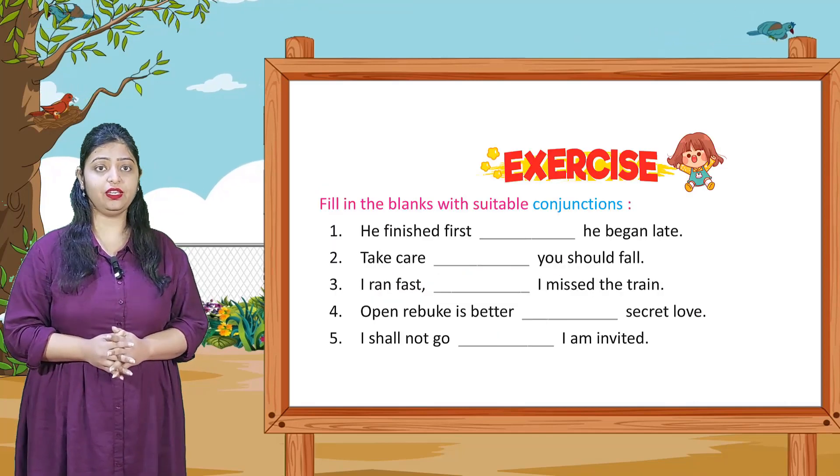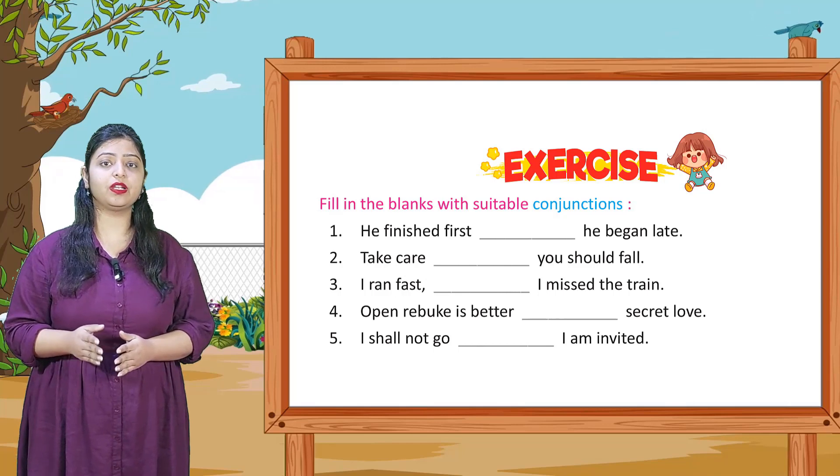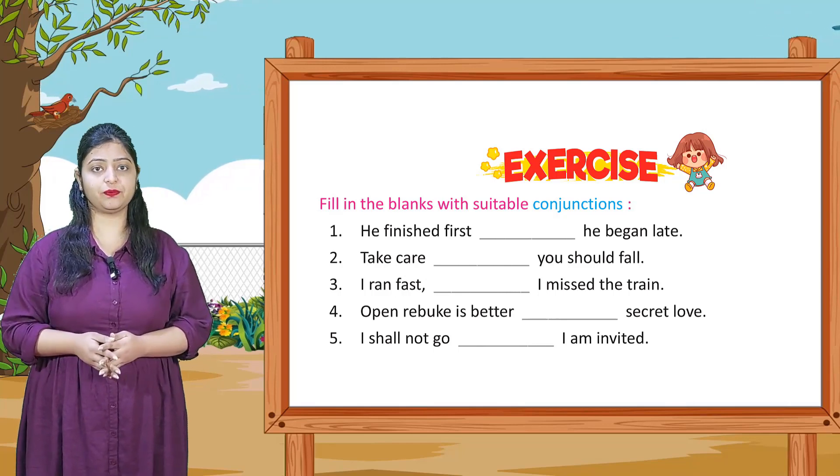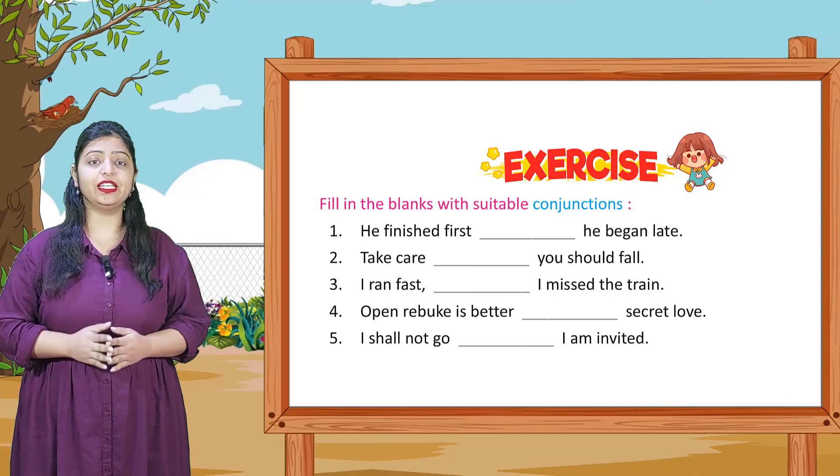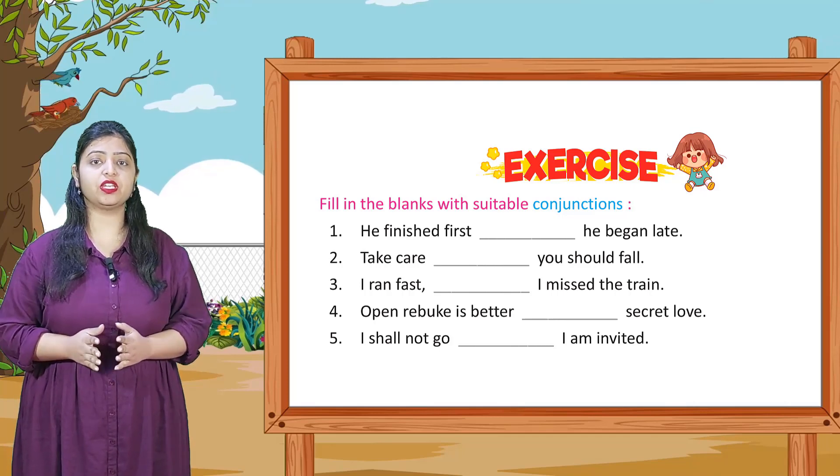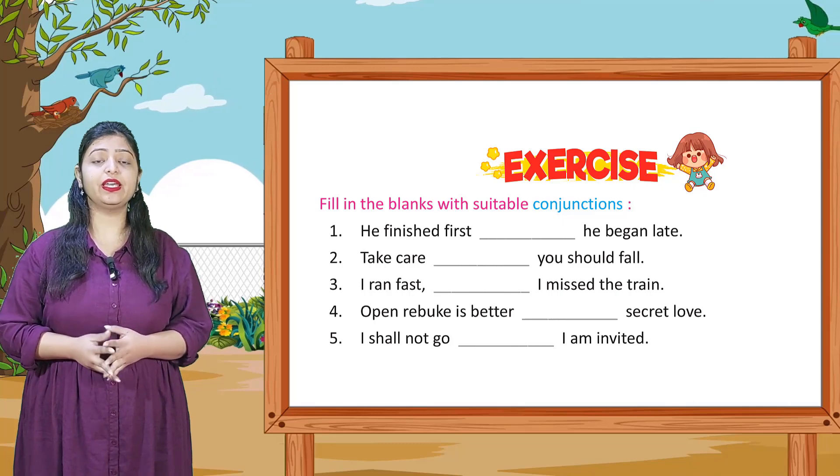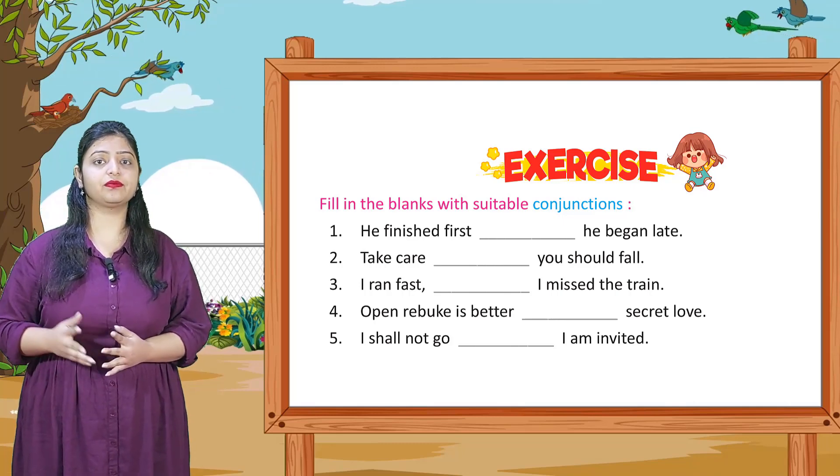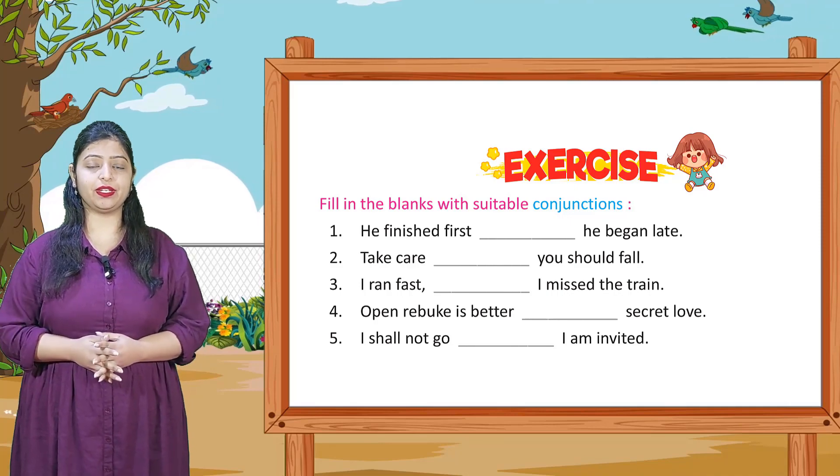Now exercises, Section A. Fill in the blanks with suitable conjunctions. Now we have to fill the blanks with any suitable conjunctions. First one: He finished first dash he began late. So here you can write He finished first though he began late. In this manner you will complete the remaining sentences.